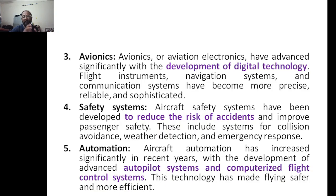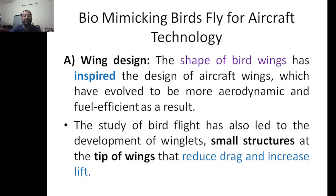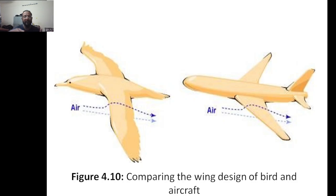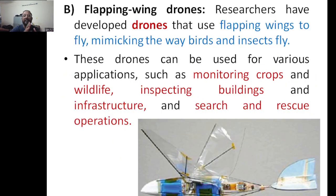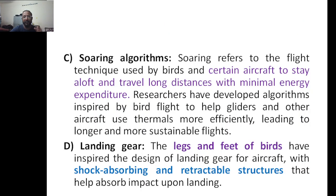Automation enables autopilot and computerized flight control systems. In wing design, we copy the same structure from birds. Researchers have also developed flapping-wing drones that mimic the way birds and insects fly — these can be used for monitoring crops, wildlife, inspecting buildings and infrastructure, and search-and-rescue operations. Soaring algorithms are inspired by the flight technique used by birds, allowing certain aircraft to stay aloft and travel long distances with minimal energy expenditure.